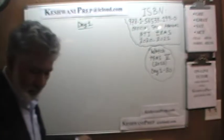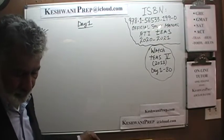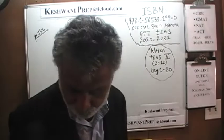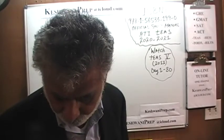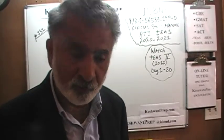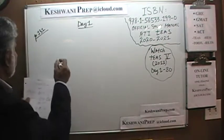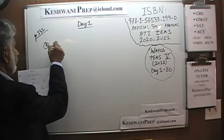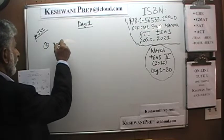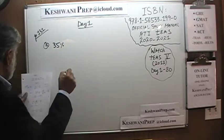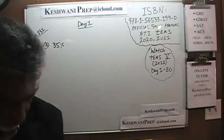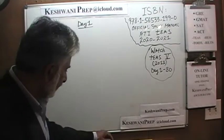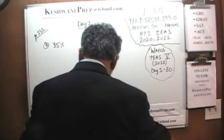Let's begin. We are on page number 131, and there are four or five examples that they have done for us — we can simply walk through them quickly. Here's the first one: we are given 35% and we are asked to convert it into a fraction.